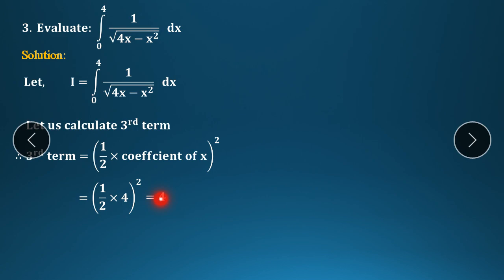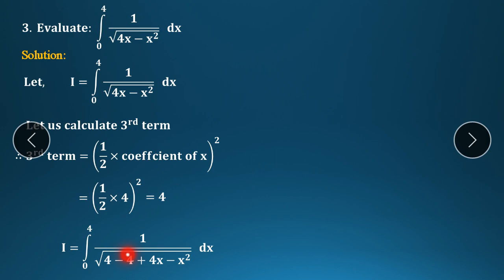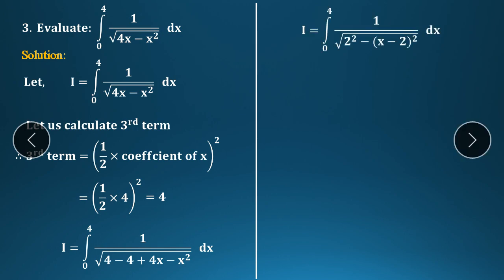Now add and subtract 4 in the denominator: 4 + 4x − x² − 4 = 4 − (x² − 4x + 4). So: I = integration from 0 to 4 of 1/√(4 − (x−2)²) dx. Here 4 is 2², so the denominator is √(2² − (x−2)²).